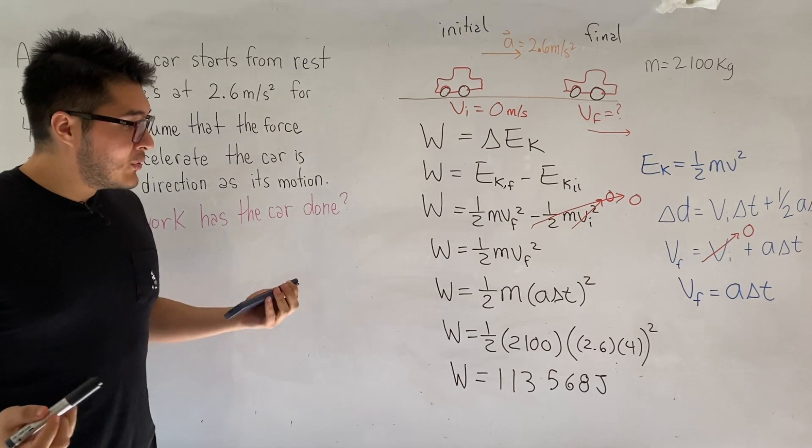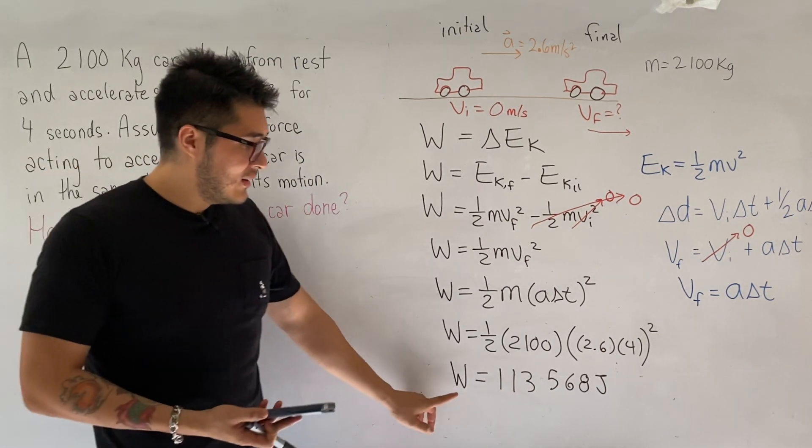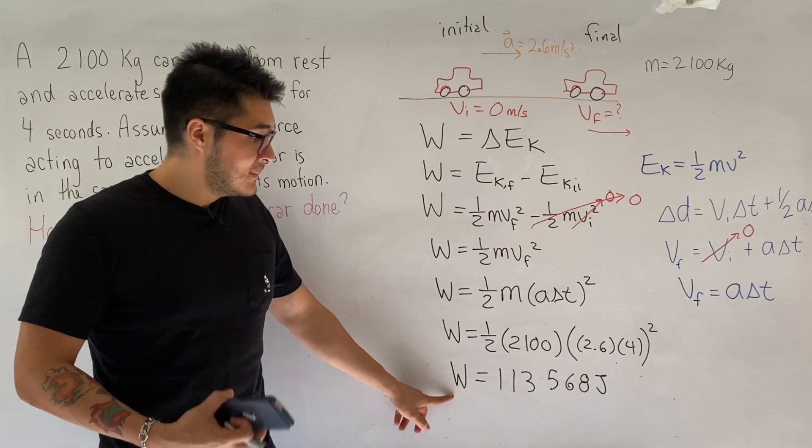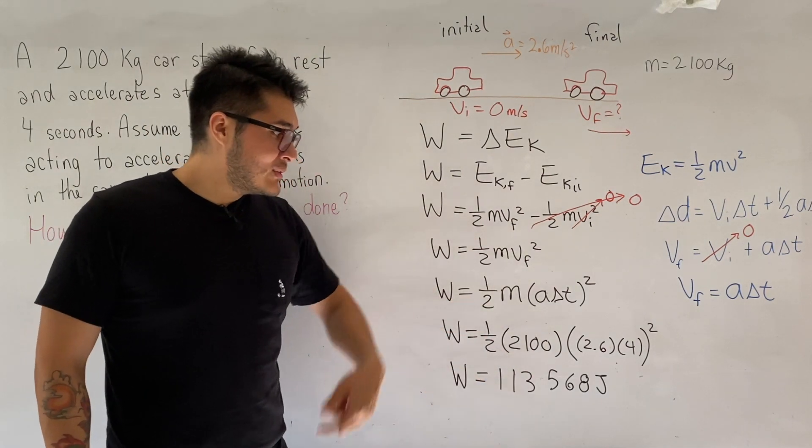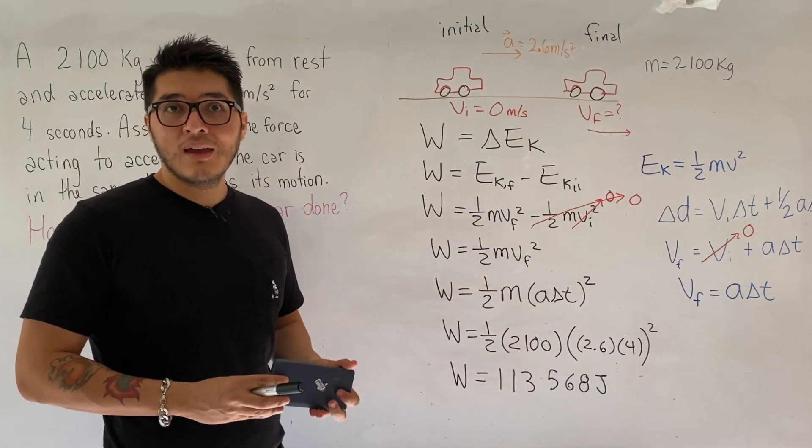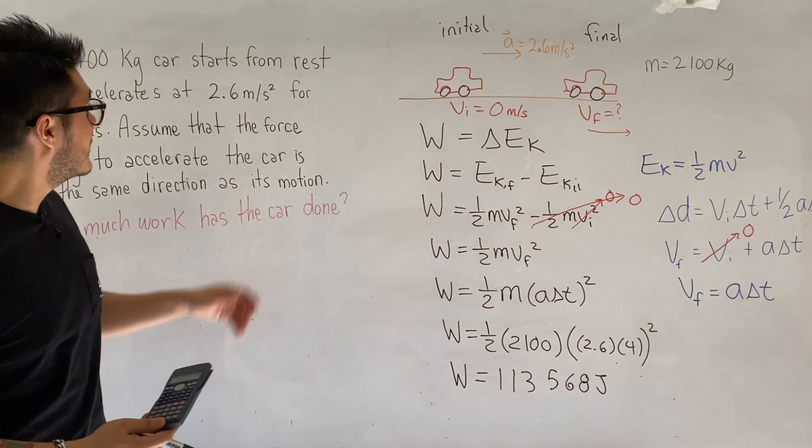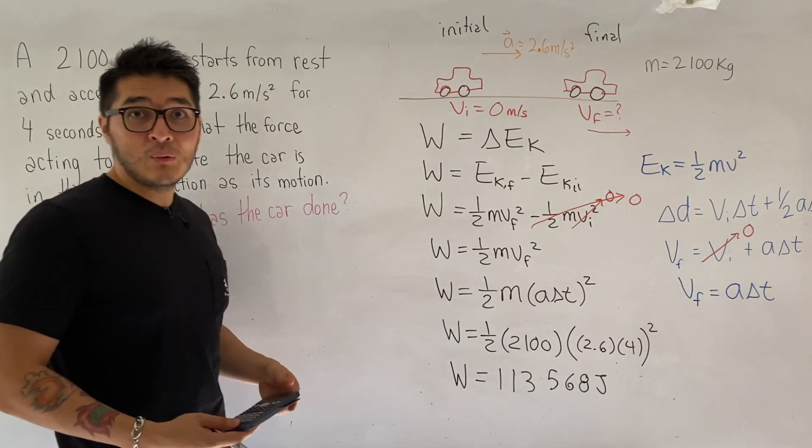So just in four seconds, look how much energy was used up by the car. Because again, work is the transfer of energy. So 113,000 joules. That's a lot of energy being used up to make it go for four seconds. Imagine when you're driving for a whole day.